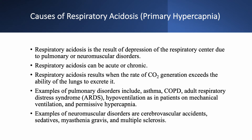What can cause respiratory acidosis? We have depression of the respiratory center, which causes CO2 retention, occurring due to pulmonary causes or neuromuscular disorders. Pulmonary examples include asthma, COPD, ARDS, and hypoventilation — such as in patients on mechanical ventilation or those subject to permissive hypercapnia. Neuromuscular causes include CVA, sedatives, myasthenia gravis, and multiple sclerosis.